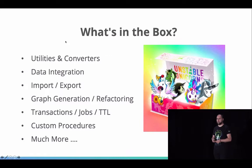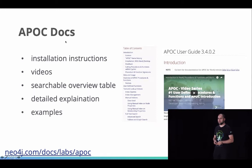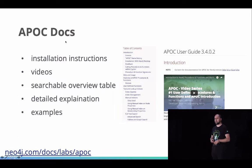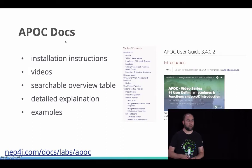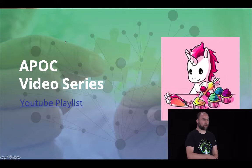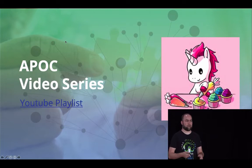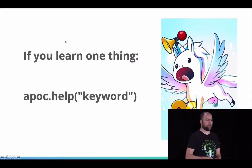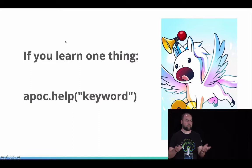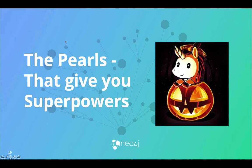Where can you learn more? First, in the APOC docs at neo4j.com/docs/labs/apoc. There are installation instructions, videos, and searchable overviews. For each function we have explanations, details, and examples. We also created an APOC video series with 13 episodes so far. And the best help for APOC is actually built into APOC itself — you can just run APOC, call APOC help, pass in a keyword, and it will list all the functions and procedures related to that keyword. So these following things in APOC are the unicorn pearls that give you superpowers with Neo4j.